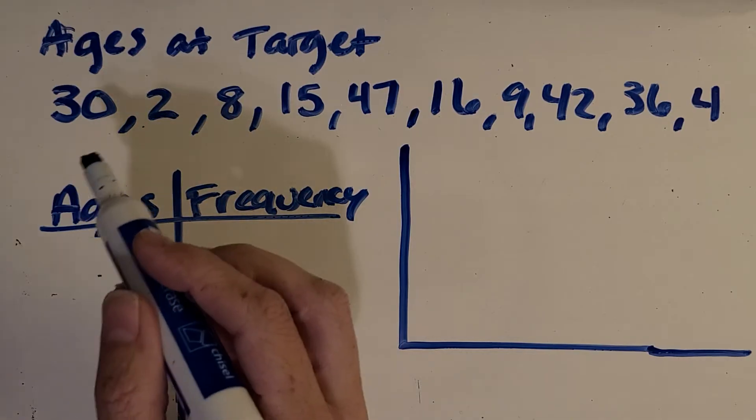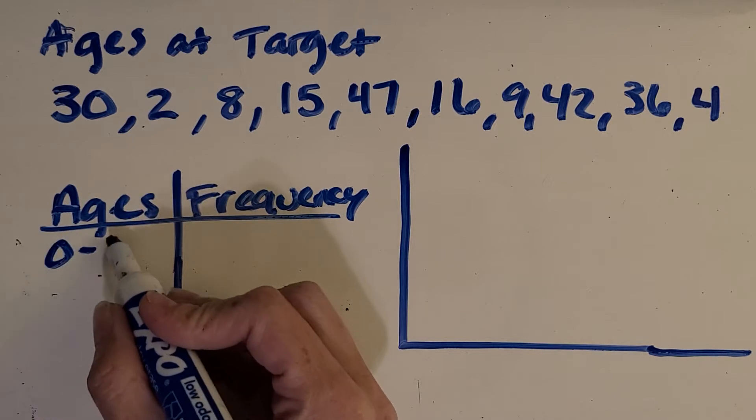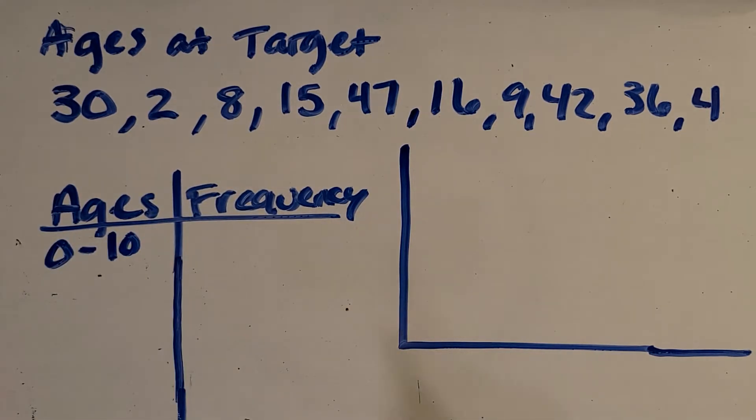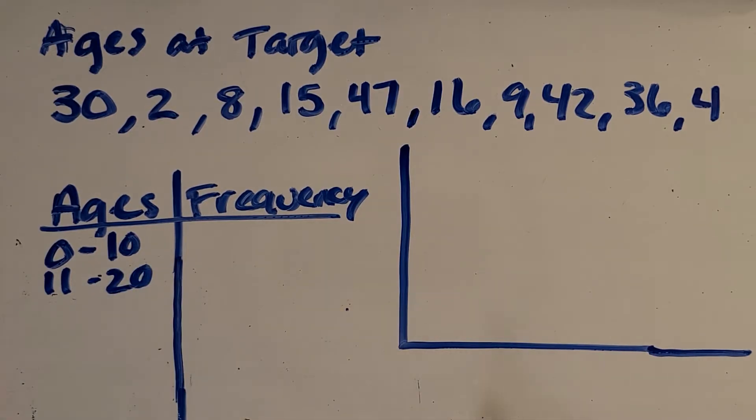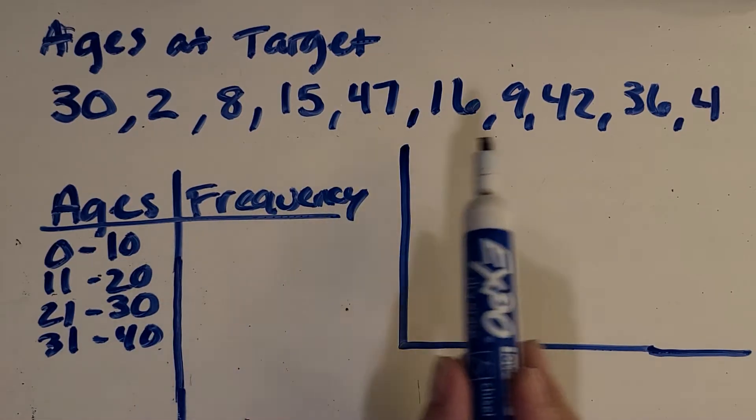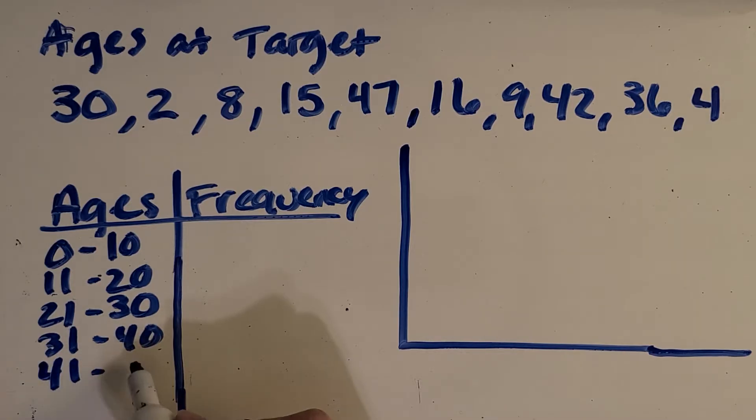So I'm noticing some single digit numbers. So I'm going to make my first range 0 to 10. Then I'm going to do 11 to 20. I got to keep going because I see some older people there, 21 to 30, 31 to 40. And I need to do probably one more range because I see some people that are older than 40. So 41 to 50. I'm making every range the same amount.